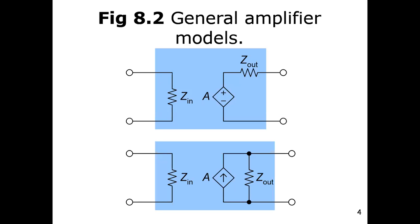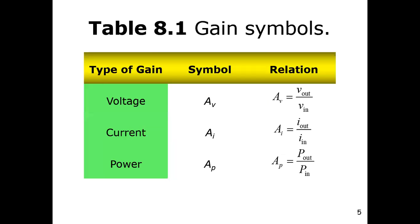Then we had the general amplifier model. We discussed that we had voltage source amplifier and current source amplifier. Amplifier gain matters more, so we discussed what we can represent. If we talk about gain — AV, AI, and AP — these are used to represent any gain for an amplifier.